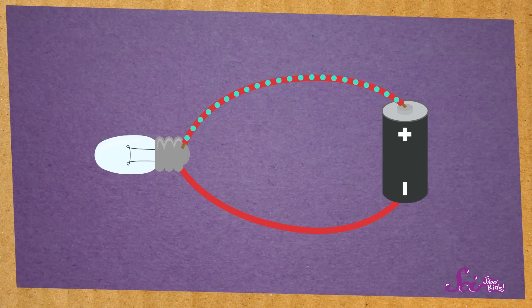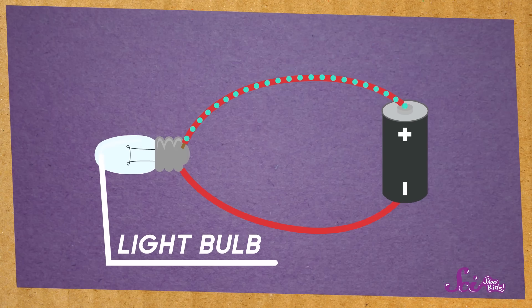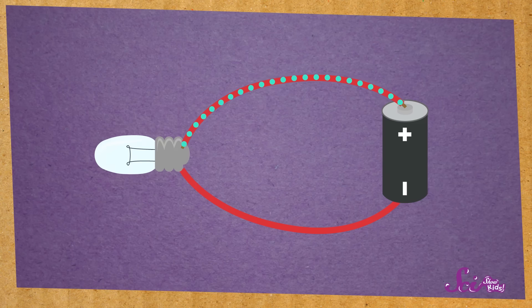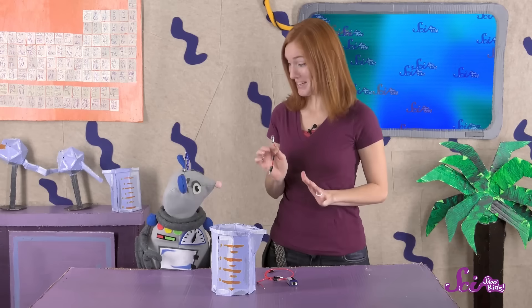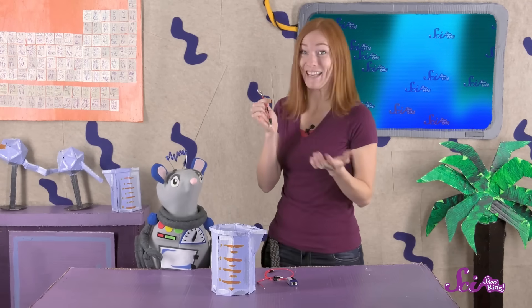The circuit then leads to whatever we want to power. In this circuit, that's a light bulb. As the electricity goes through the bulb, the bulb lights up. The electricity leaves the bulb and flows back through the battery. Then it follows the circuit all over again. As long as there are no spaces in the circuit, the bulb will stay lit.